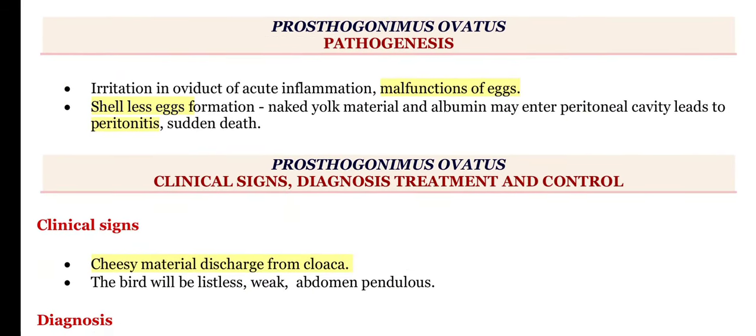When it comes to pathogenesis, the site of the fluke is in the oviduct, which may cause inflammation — acute inflammation of the oviduct, which is salpingitis. Malformation of the eggs may also be noticed; this is one of the main clinical signs. The eggs may be shell-less, and because of this, the naked yolk material or albumin may enter the peritoneum, leading to peritonitis or sudden death.